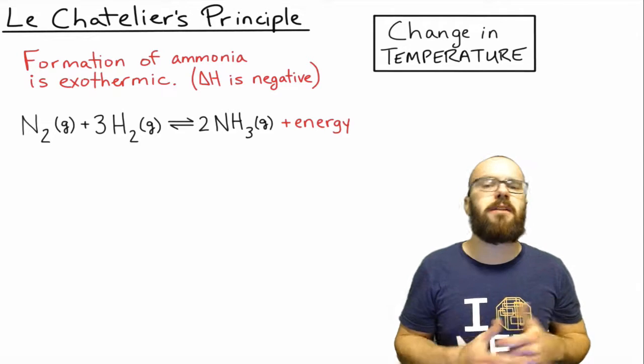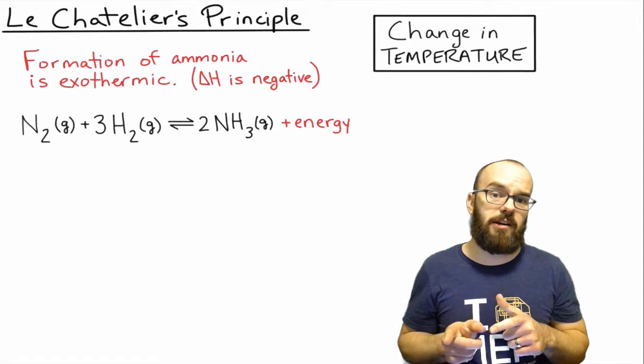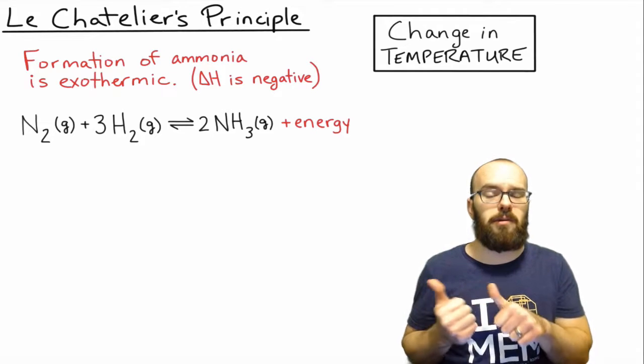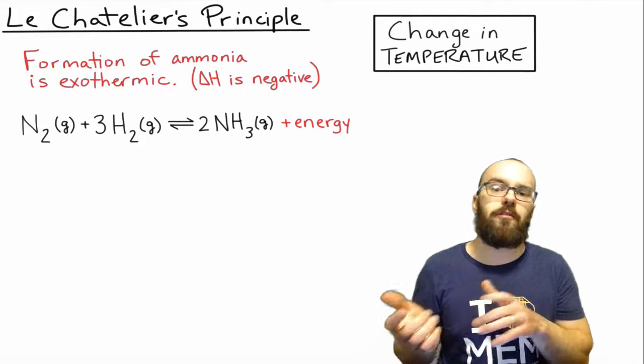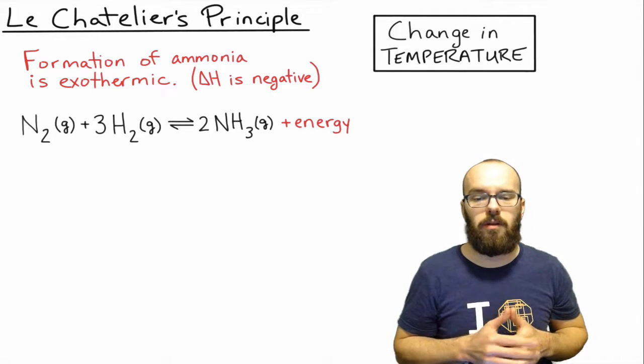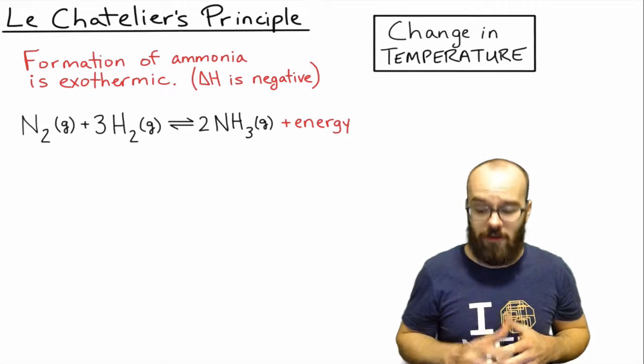If this were an endothermic reaction, we would write plus energy on the reactant side, because we need to put energy in in order for this reaction to proceed forward. So that's the first step we have to do is identify that.